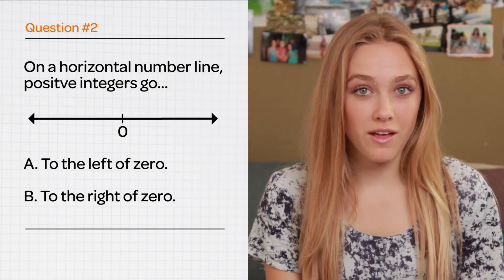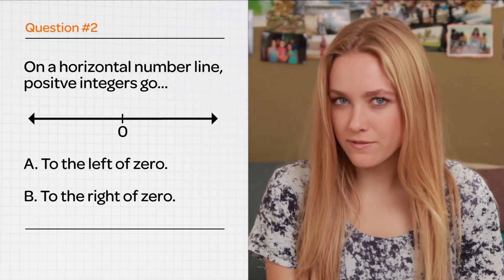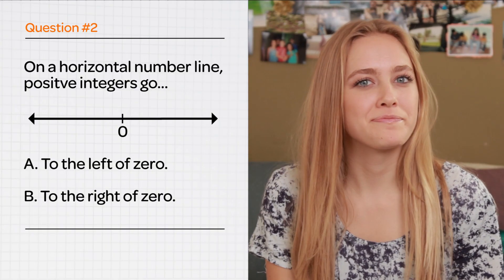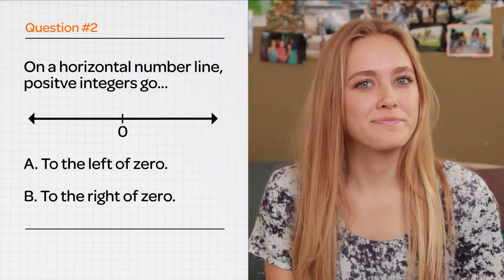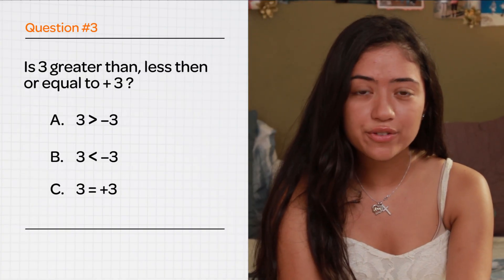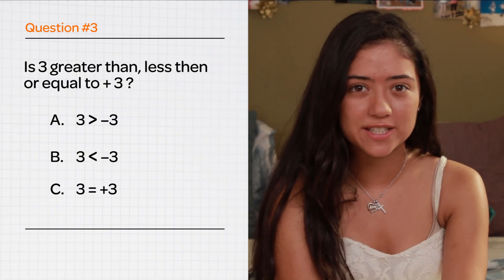On a horizontal number line, do positive integers go to the left of the zero or the right of the zero? Is 3 greater than, lesser than, or equal to positive 3?